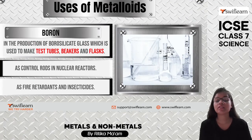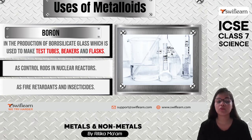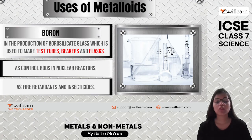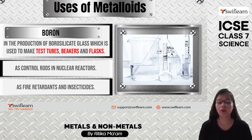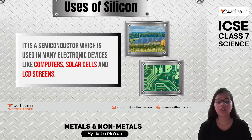Now let's look at metalloids and their uses. Boron is used to produce borosilicate glass, which is used in laboratories for making test tubes, beakers, and flasks. It is also used in nuclear reactors as control rods, and as fire retardants and insecticides.